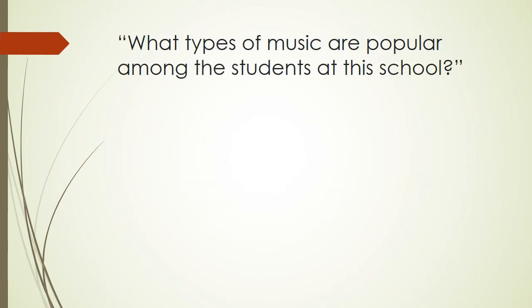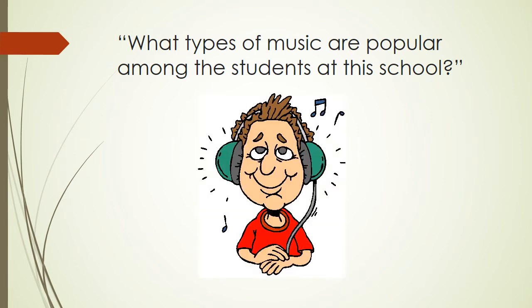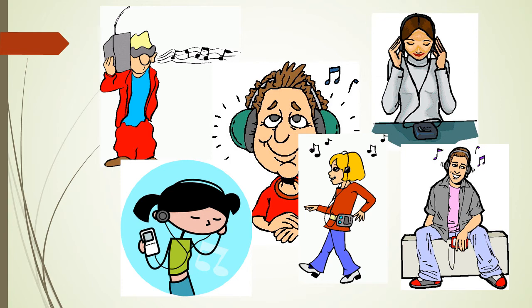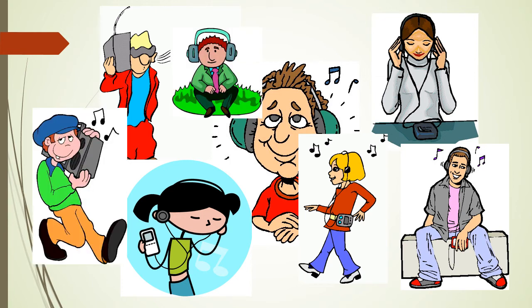For example, let's say you are trying to figure out what types of music are popular among the students at your school. Could you ask just Bob in order to answer this question adequately? Probably not. Bob might have musical taste that is very different from the average population. We know that musical tastes will vary among the students, and so we would need to include more in our sample than just Bob. The more members of our sample, the more variation we expect to see, and the better picture we'll get of the musical tastes among our target population.